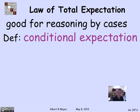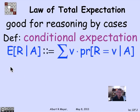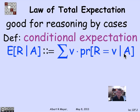It requires a definition of what's called conditional expectation. The expectation of a random variable r given event a is simply what you get by replacing the probability that r equals v by the probability that r equals v given a. So it's the sum over all the possible values that r might take of the probability that r takes that value given a.